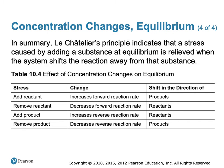Table 10.4 summarizes the effects of changing concentrations on equilibrium. If the stress is to add a reactant, we increase the rate of the forward reaction and make more products. If we remove a reactant, we decrease the rate of the forward reaction, increase the rate of the reverse reaction, and produce more reactants. If we add product, we increase the rate of the reverse reaction and make more reactants. If we remove product, we decrease the reverse reaction, increase the forward reaction, and make more products.